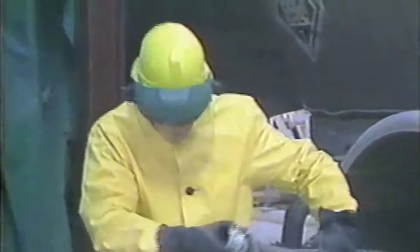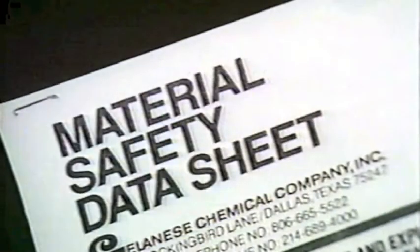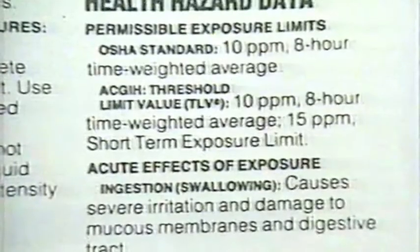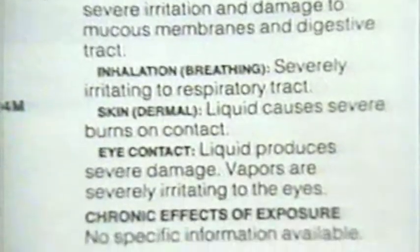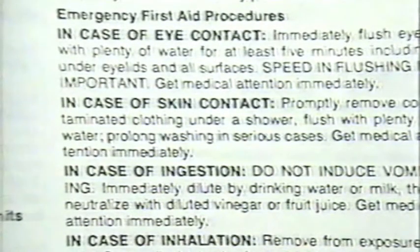Sometimes that's not as easy as it sounds. Labels and material safety data sheets, specifically the health hazard data and special protection sections, are your most important tools. They'll tell you what hazards you face, what the toxic effects of the substance might be, how to protect yourself by reducing your exposure, and what first aid procedures to follow should you need them.